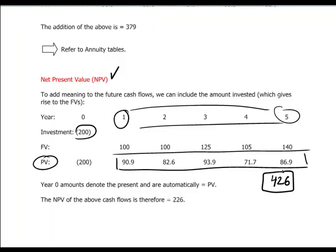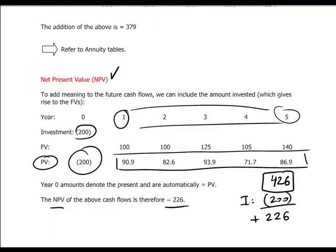Against this we deduct the initial investment value of 200, which corresponds to year 0. Deducting the investment amount from the present value of the future cash flows leaves us with a net amount of 226. This is the net present value — the surplus or excess amount over the initial investment.